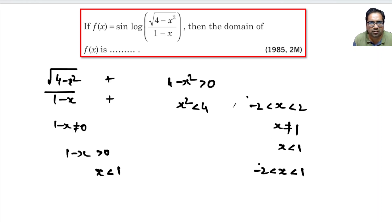All three conditions taken together. x cannot be 1 because then it will be 0. If x is greater than 1, the denominator will be negative, then log of this function is negative, which is not possible. So what is our domain? (-2, 1) - both are open brackets.